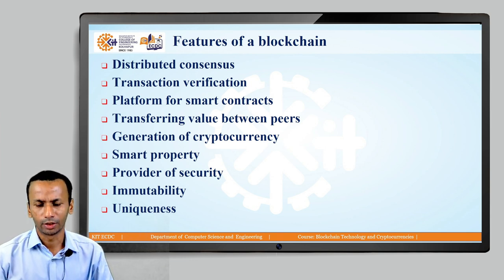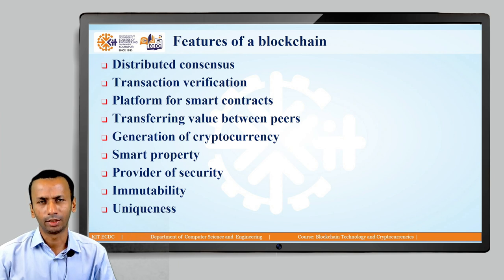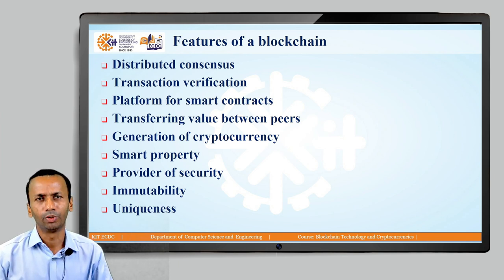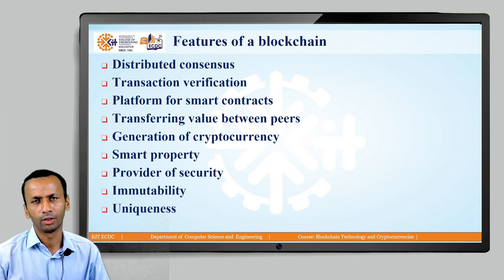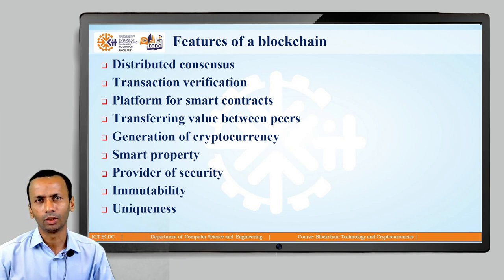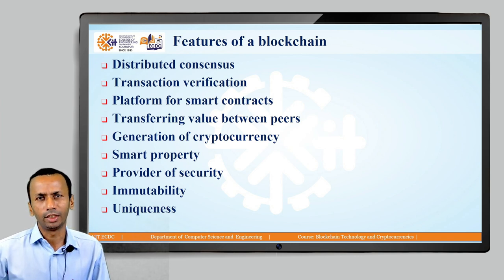The first feature is distributed consensus. Whenever a transaction is created in the blockchain network, that transaction is confirmed only when all the nodes in that particular blockchain network agree on that transaction. If consensus is reached among all the nodes in the network, then and only then is the transaction confirmed. This distributed consensus mechanism plays a very important key role.